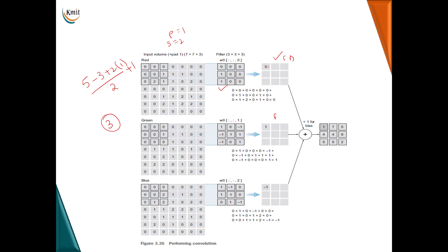The feature maps from all three channels are added together — for example, 0 plus 1 plus minus 1, and adding a bias value of 1, gives 1. Similarly, all corresponding pixel values across channels are added up along with the bias to produce the final feature map. This is how convolution works on a colored image, the same as for grayscale images.